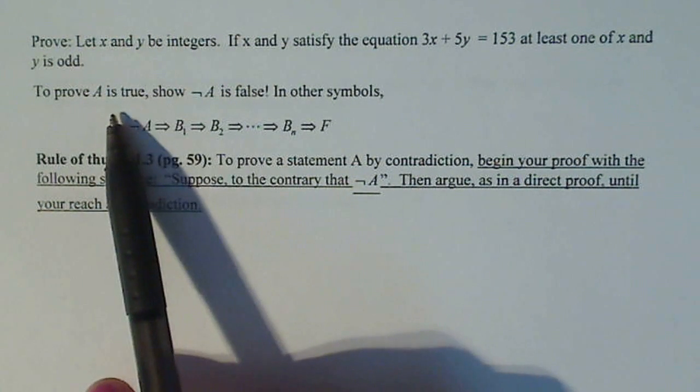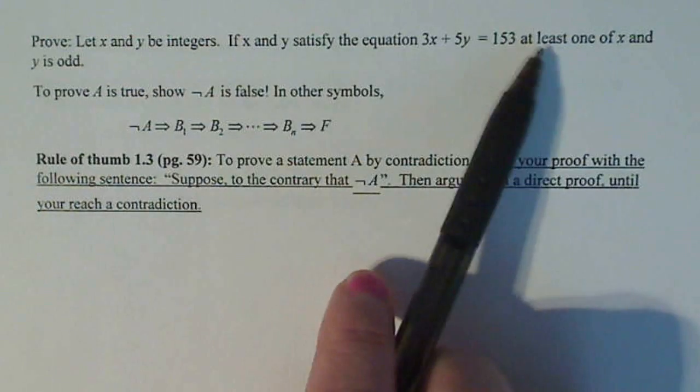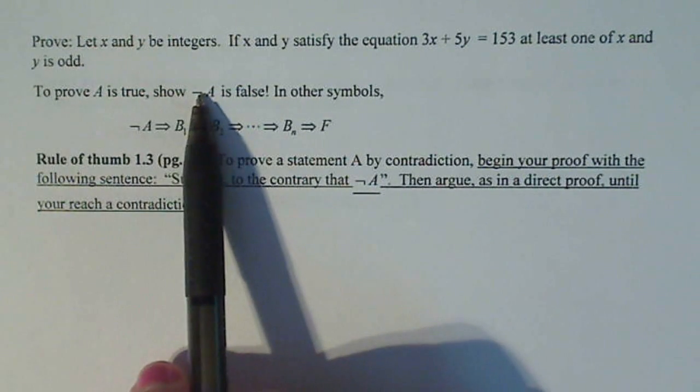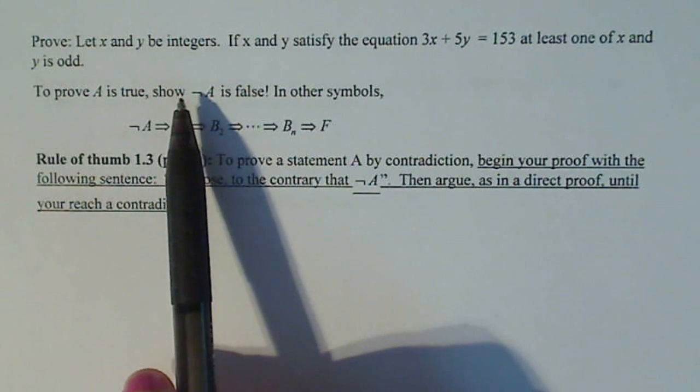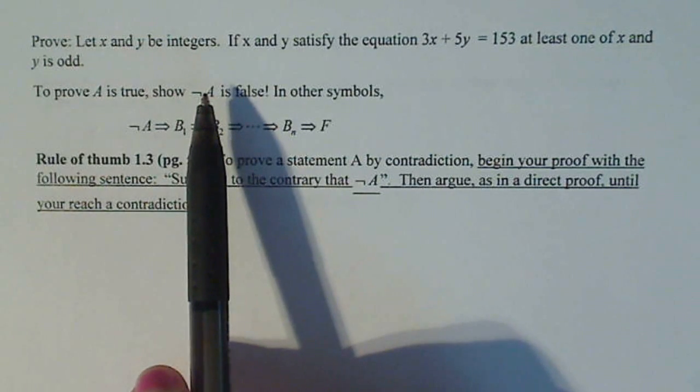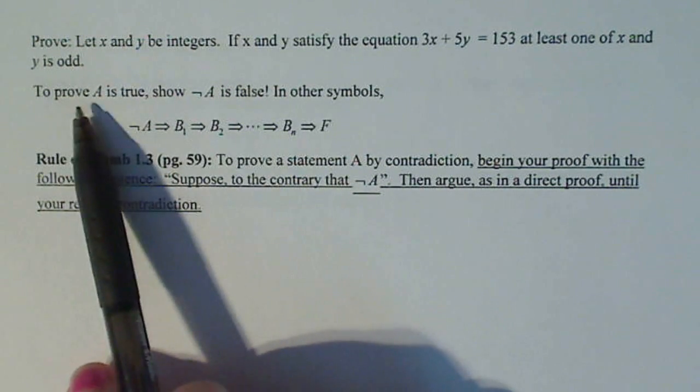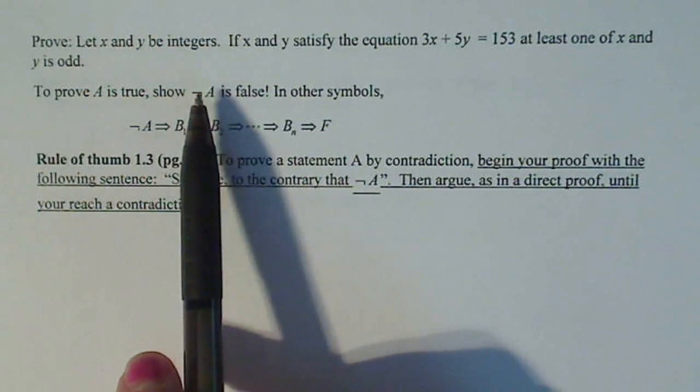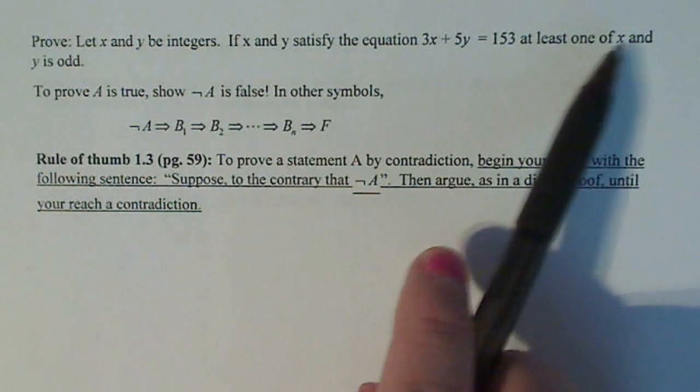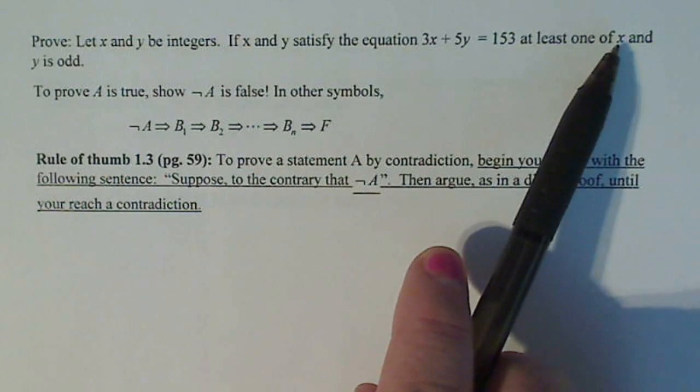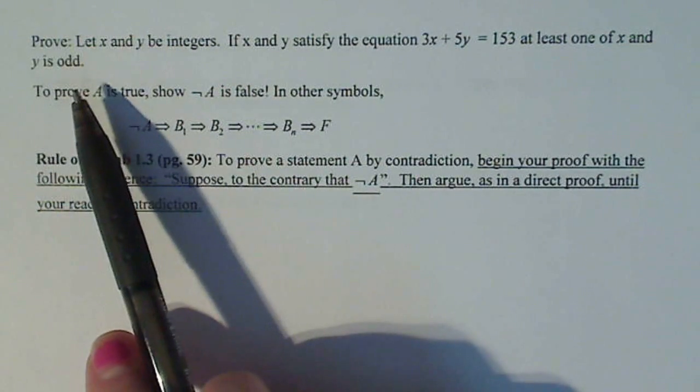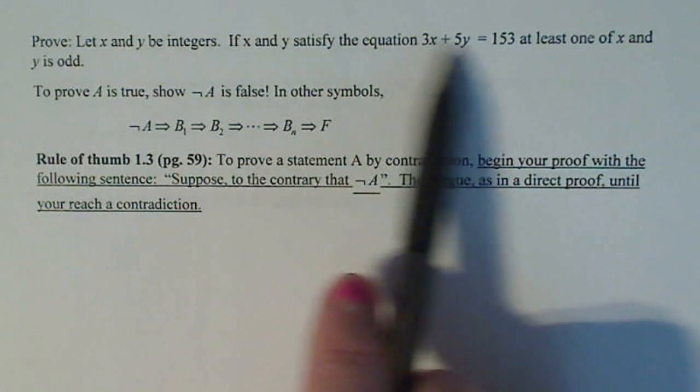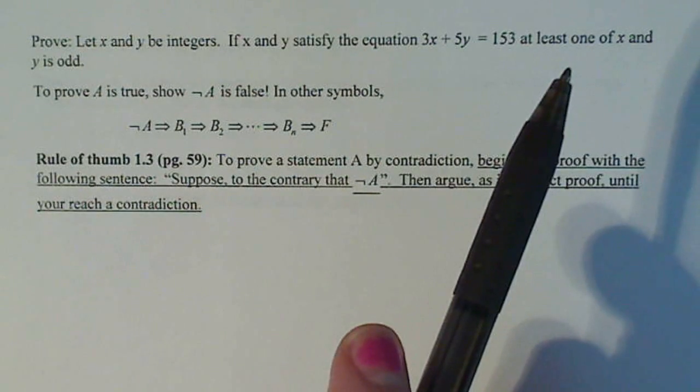So if I want to prove that A is true or prove that at least one of x and y is odd, I have to first start out that A, well, how does it say this? To prove A is true, show that not A is false. So I start out with the idea that not A. So that means if I do not that one of x and y is odd, that this can't be true. So that creates a contradiction.